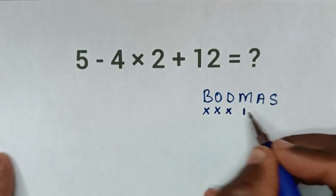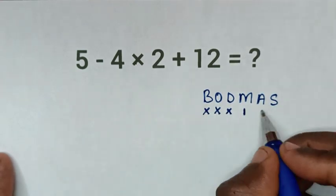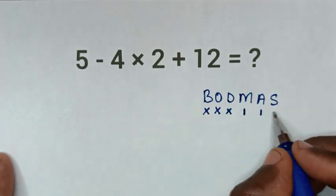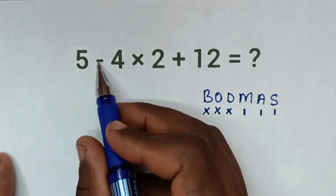M for multiplication - we have multiplication, which is this. A for addition - we have addition, this one. And S for subtraction - we have subtraction, this.